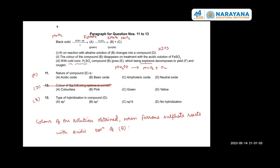You can balance this reaction. These are the questions. So nature of the compound E is - compound E is Mn2O7, its nature is acidic. Color of the solution obtained from ferrous sulfate reaction with acidic solution of B - ferrous sulfate will convert into ferric Fe2(SO4)3 and its color will be yellow, but there will also be Mn2+. The type of hybridization in compound D, KIO3, it is sp3. Any other doubt in this case?